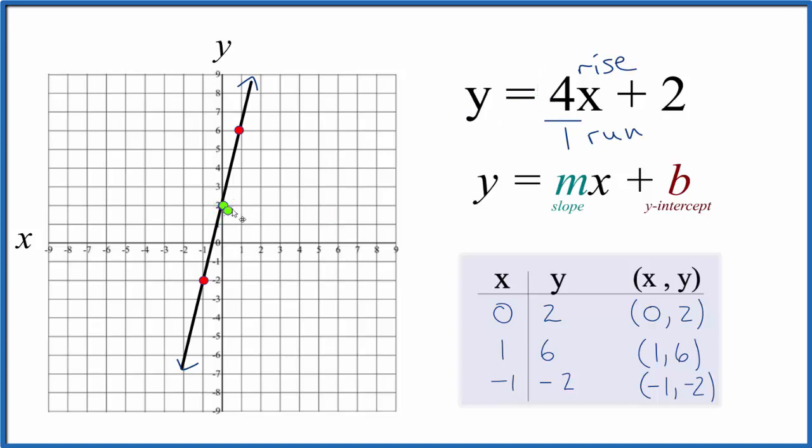So we go to the y-intercept, we rise the 4, 1, 2, 3, 4, and over 1. And we could do it again, but we'd be off our graph here.